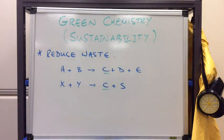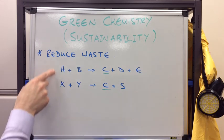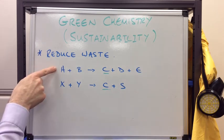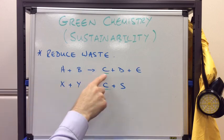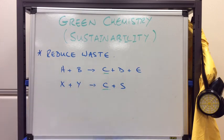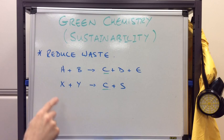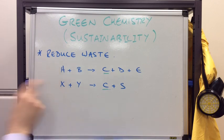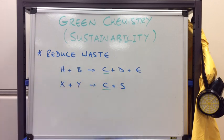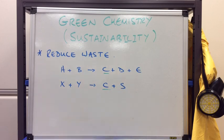Another way to improve sustainability is to reduce waste. Consider two processes: process one makes product C but produces two waste products, while process two makes C and only one waste product. If you can develop processes that make the same product but with less waste, that is a way to make your process more sustainable.